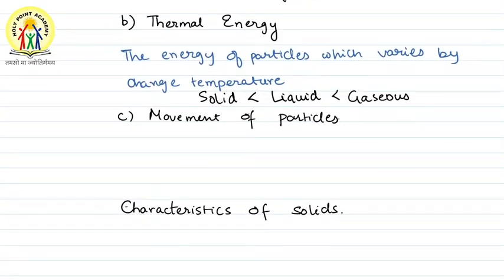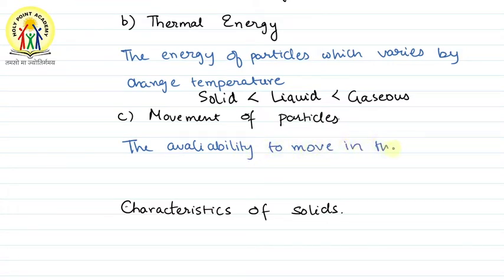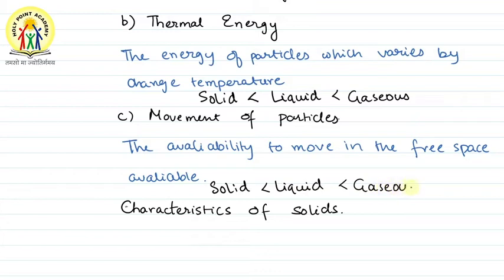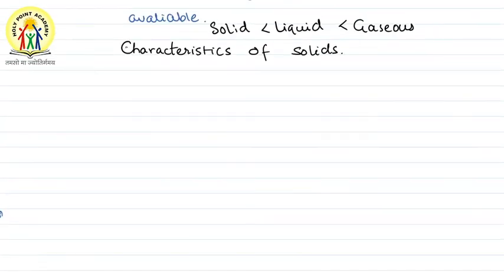The last part we are discussing is movement of particles — the ability to move in the free space available. The movement of particles depends on how much freedom or free space is available to a molecule or atom. In solids, this movement is most restricted — particles can only show vibratory motion about their mean position. Movement is maximum in gases and minimum in solids.